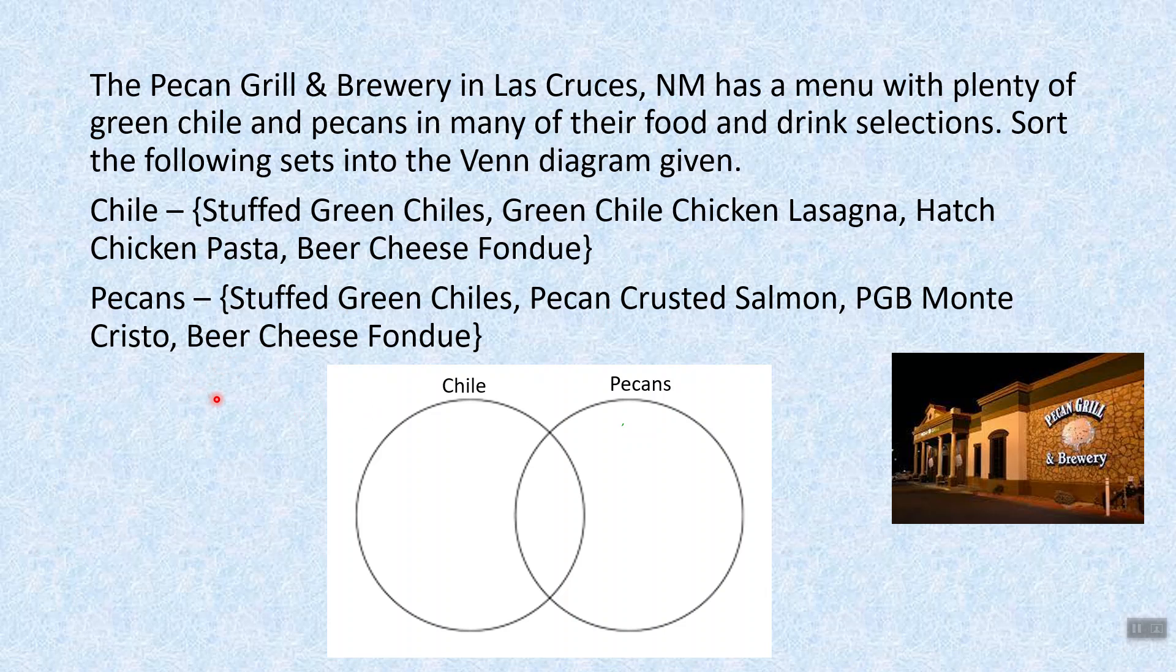So if I want to sort these two sets into Venn Diagrams, I would start with the stuffed green chilies. And I ask myself, stuffed green chili is definitely in the chili circle, but look, it's also in the pecan circle. So if it has to be in chili and it has to be in pecan, it has to be in their overlap. This will be part of their intersection.